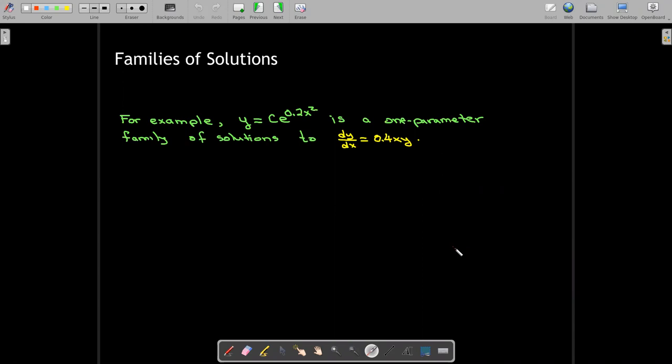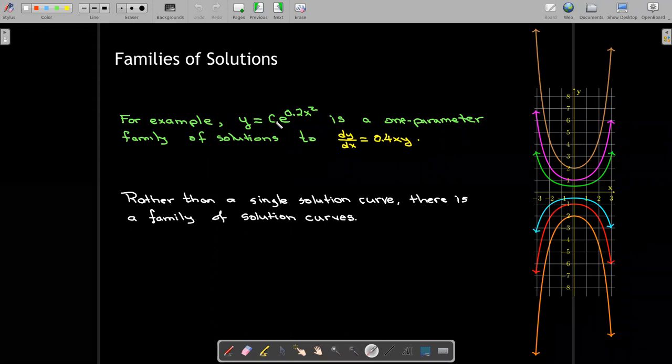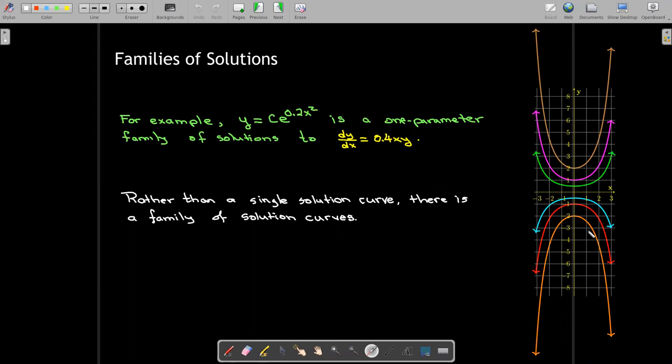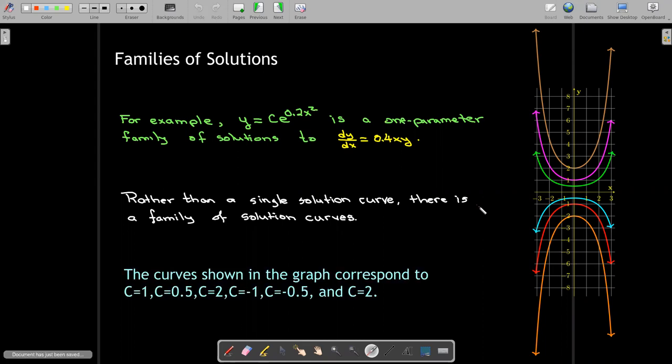Here we have a one-parameter family of solutions to the differential equation dy dx equals 0.4xy. The solution which we're told is y equals c times e to the 0.2x squared. We can verify that by differentiating both sides and checking that the right-hand side equals the left-hand side. There's this constant. So, instead of getting a single solution curve, we get a family of solution curves. Here are a few of them. Obviously, c can have any value, any real number value. And so, there would be an infinite number of curves, but we've plotted just a few of them here corresponding to a small number of values of c.